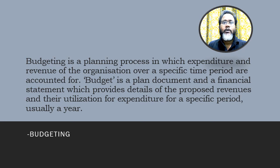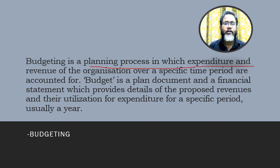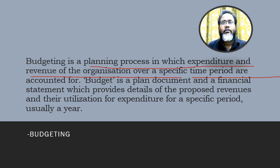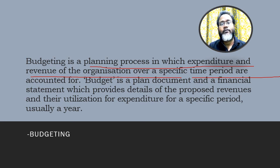Budgeting is a kind of planning process where a specific period of time is taken and the expenditure and revenue of the organization are accounted for. A budget is a plan document and a financial statement which provides details of the proposed revenues and their utilization, usually for a particular year. Each year you prepare a budget specifying what amount is required for running the library and under what heads.